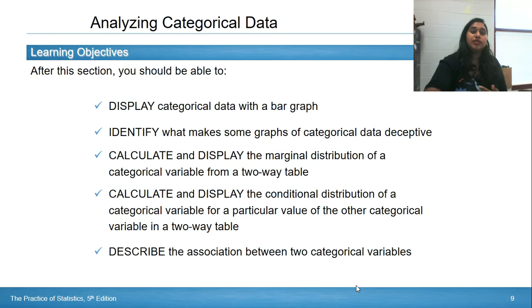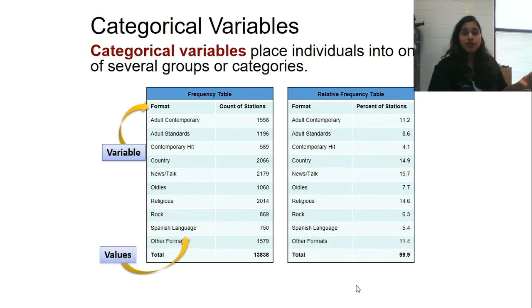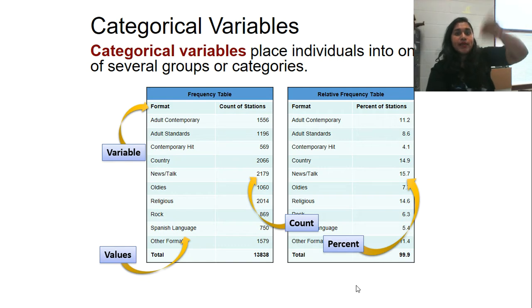So moving forward to analyzing categorical data. So what is a categorical data? Again, that's those categories. So here we have stations, radio stations. So the categories are adult contemporary, adult standards, country, rock, Spanish language. Those are categories. Those aren't numbers. But we're going to collect how many people are listening to that station. And so there's a frequency table. It's the number of people who listen inside us on contemporary hit. 569 people, I guess, self-reported that they're listening to contemporary hit. And then we have a relative frequency table, which actually takes what is the percent out of 100. In this case, technically 99.9. But that's that percent of people. So our variable is the format. What type of radio station? The values are the categories underneath. And the count is obviously the number in the count of stations or the percent. So that's how we use the data.